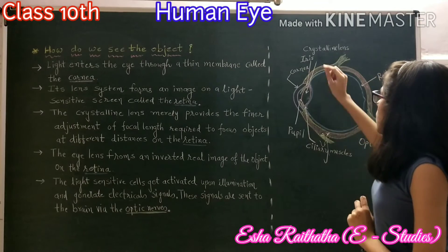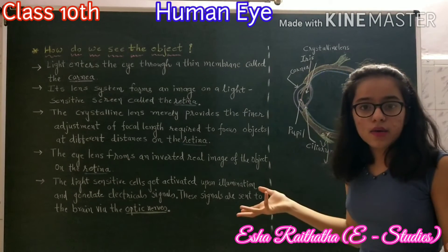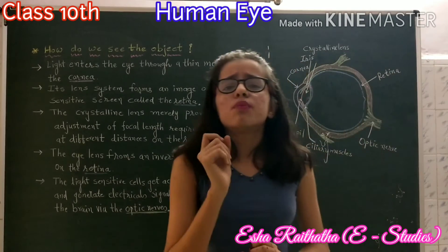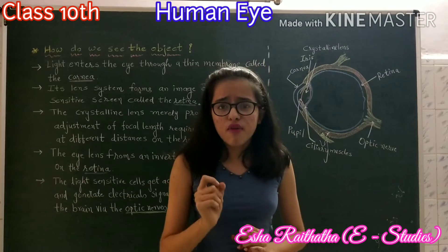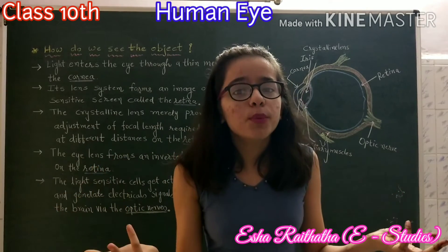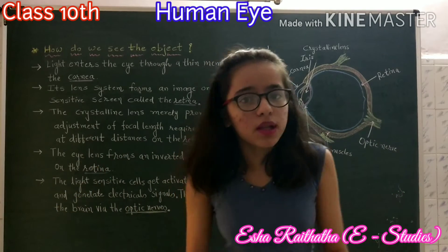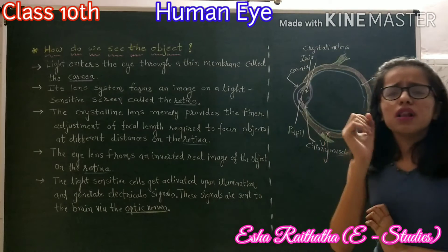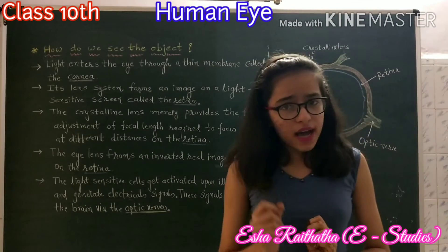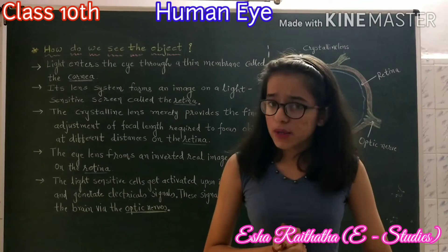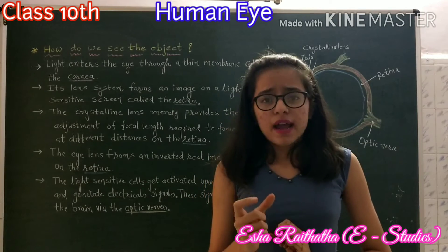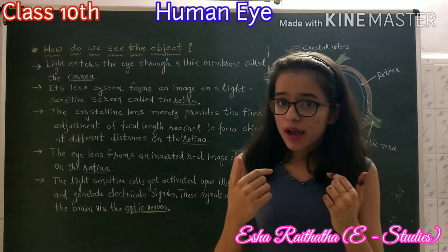Now, what is the iris? The iris is a dark muscular diaphragm that controls the pupil. The pupil is an opening in the eye that regulates and controls the amount of light entering the eye.